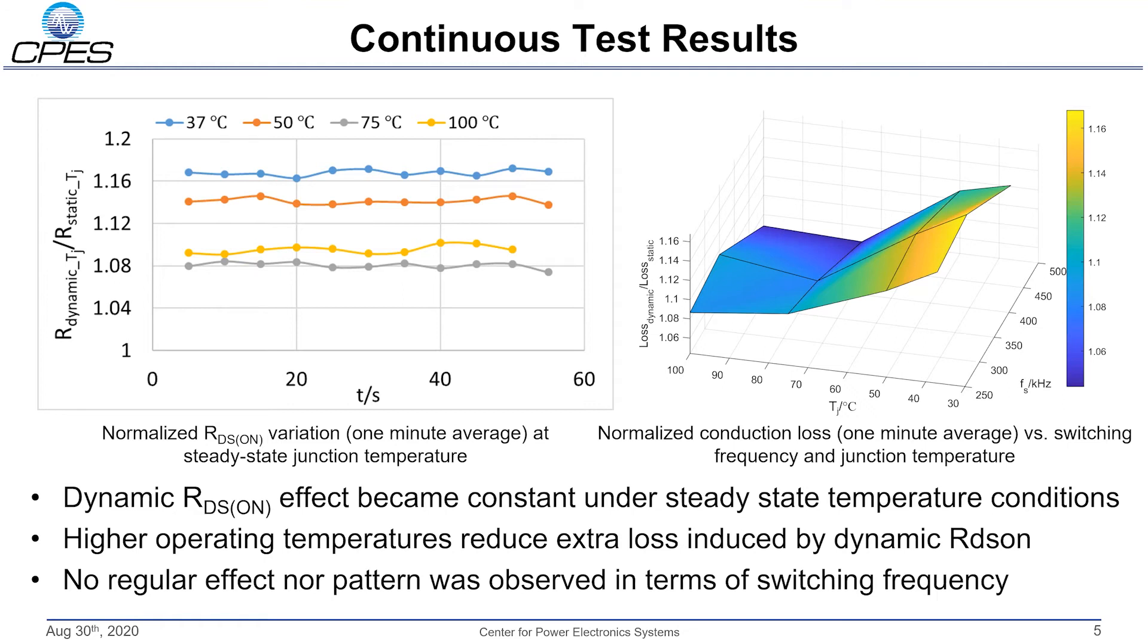In all, the observed at least 10% increase in conduction losses cannot be neglected, since under soft switching operation, the switching losses of the converter will be nearly eliminated, leaving only conduction losses as the main thermal load for the cooling system.